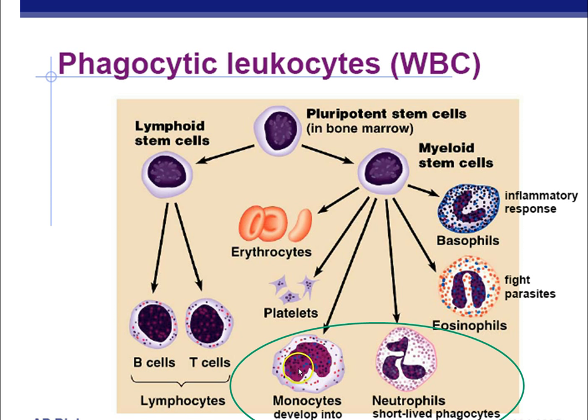Now, all these red blood cells and white blood cells — here we have the red blood cells, here we have platelets, and here we have all the white blood cells.